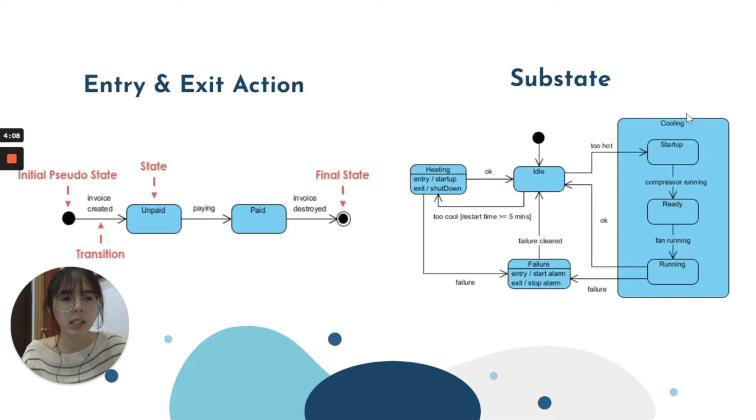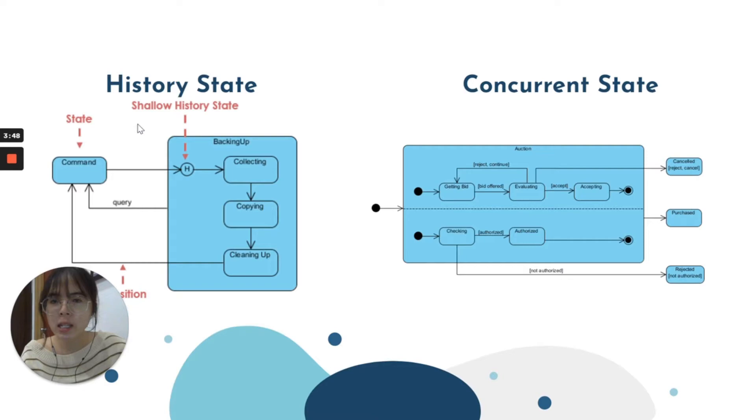Next notation is sub-state. Let's look at the big box here. This is actually a state called as cooling state. In this state, we can see there's a lot of smaller state. This smaller state is called as sub-state, or we also call it as nested sub-state. If a state that contains a lot of sub-state, we can actually call this whole thing as a composite state.